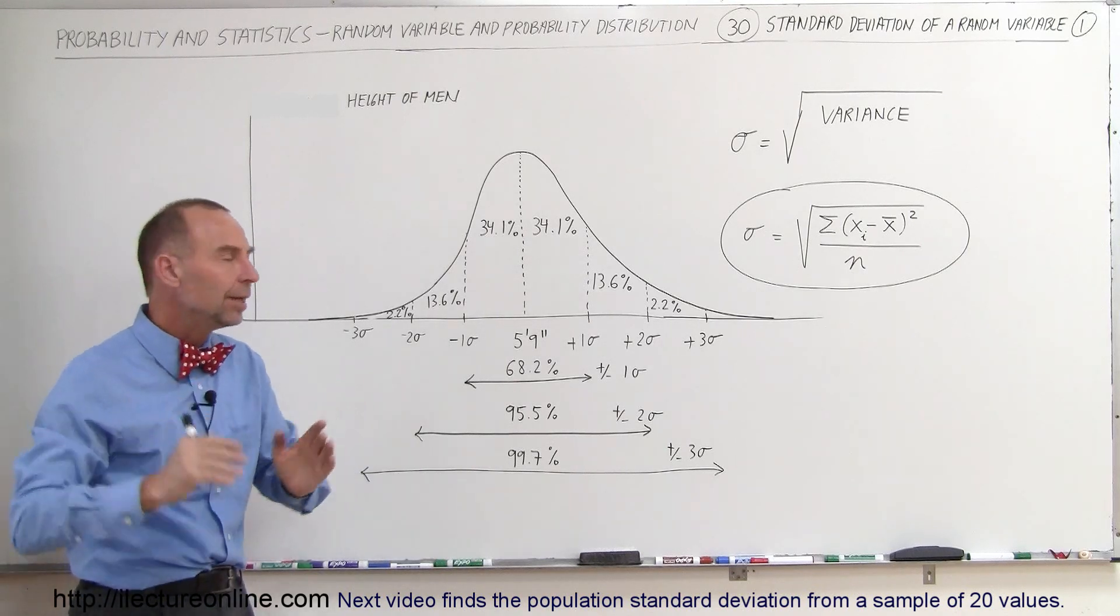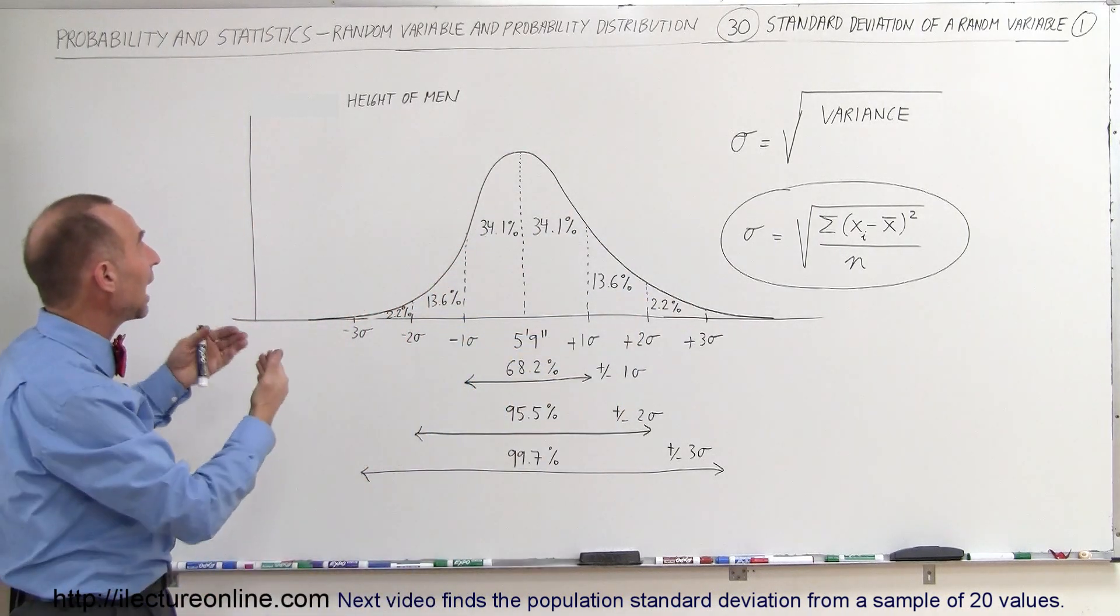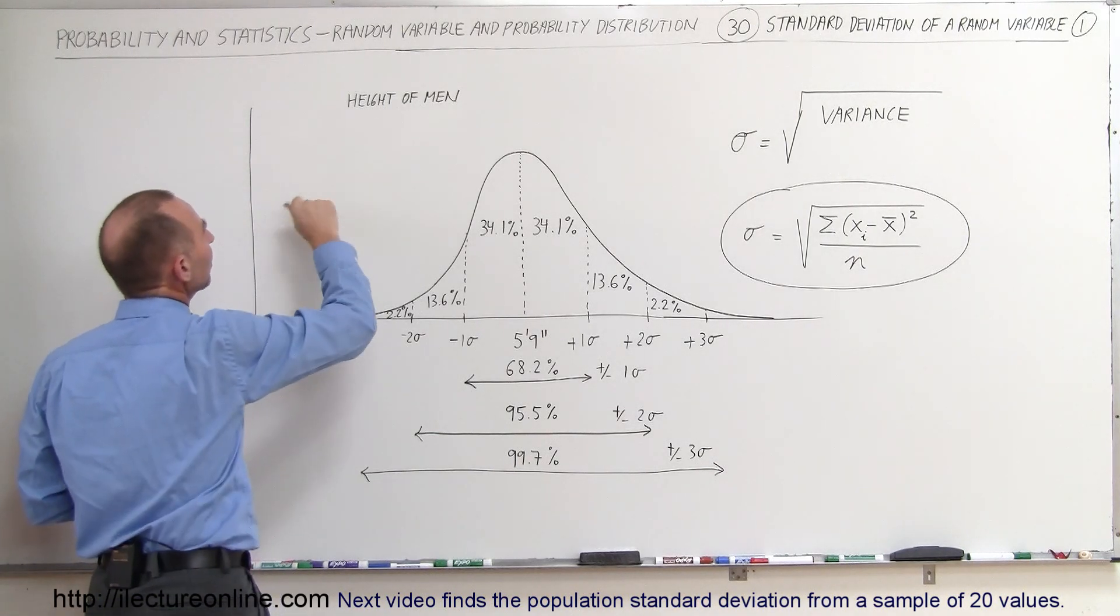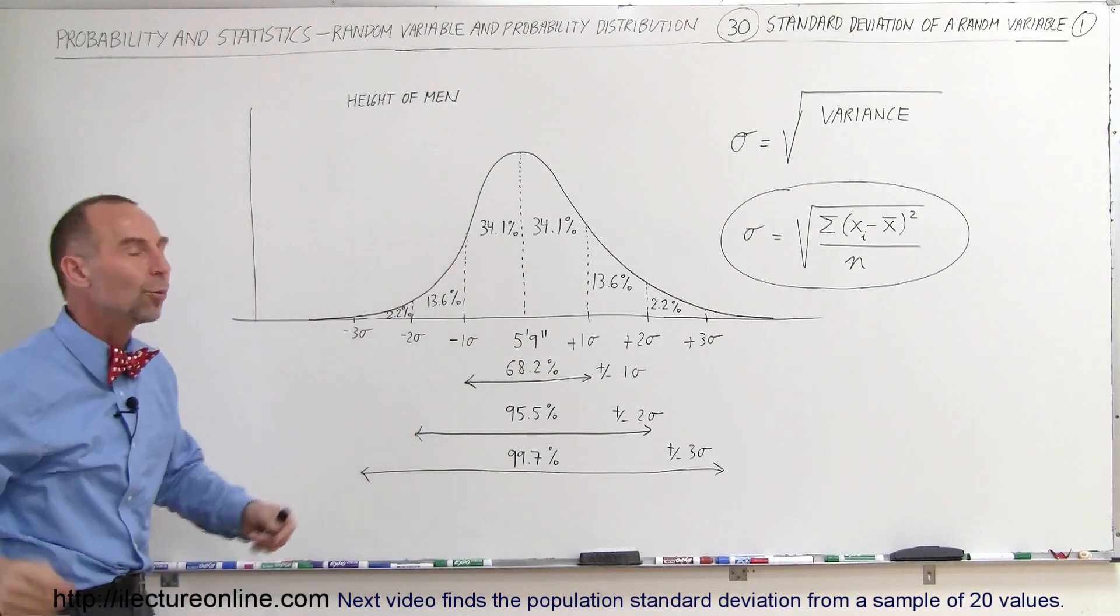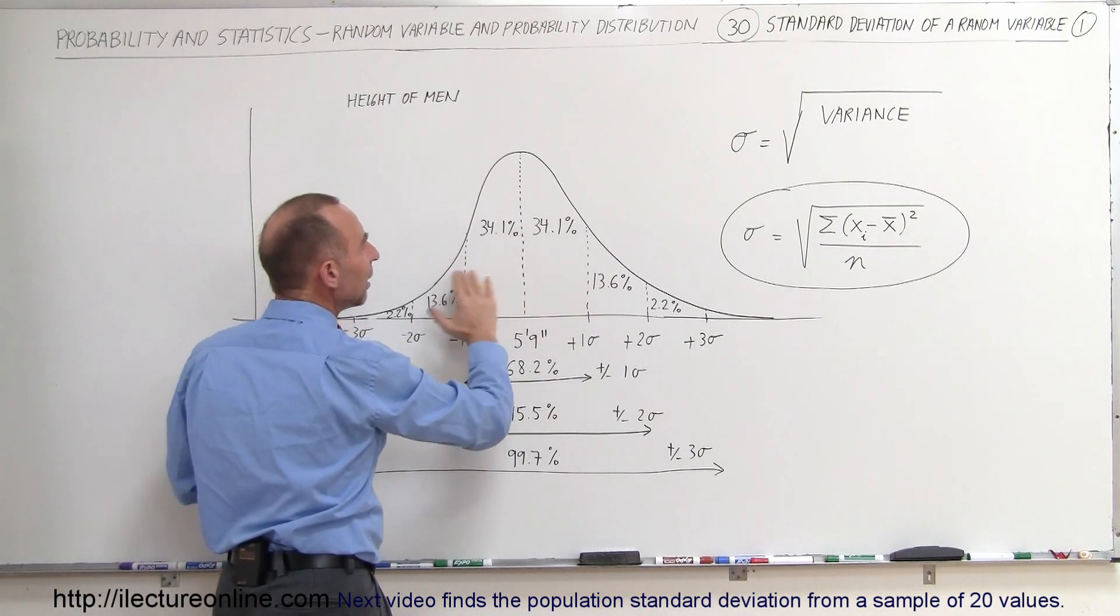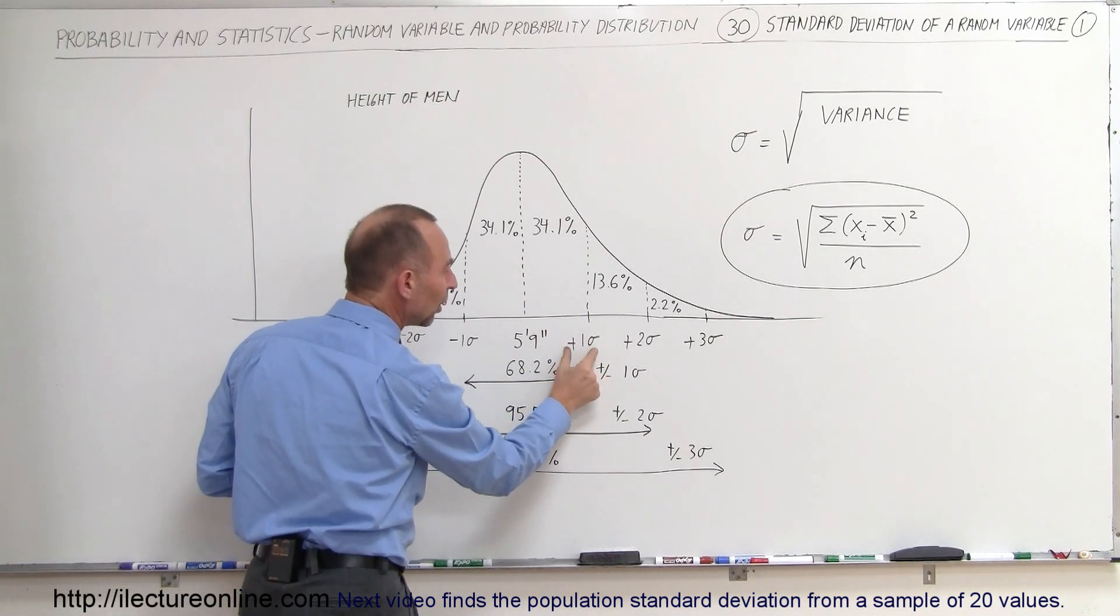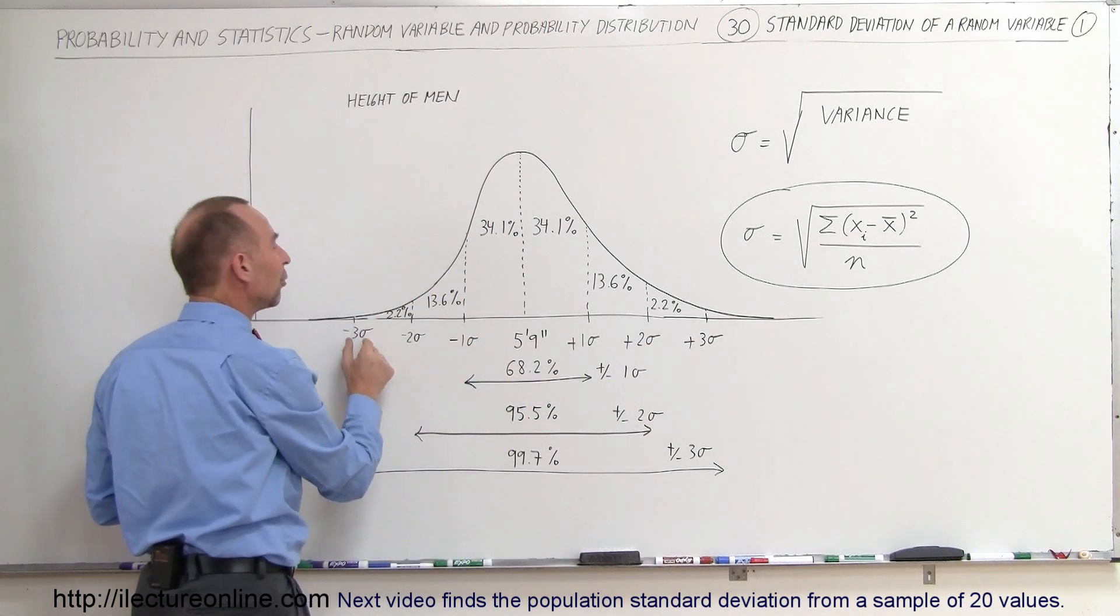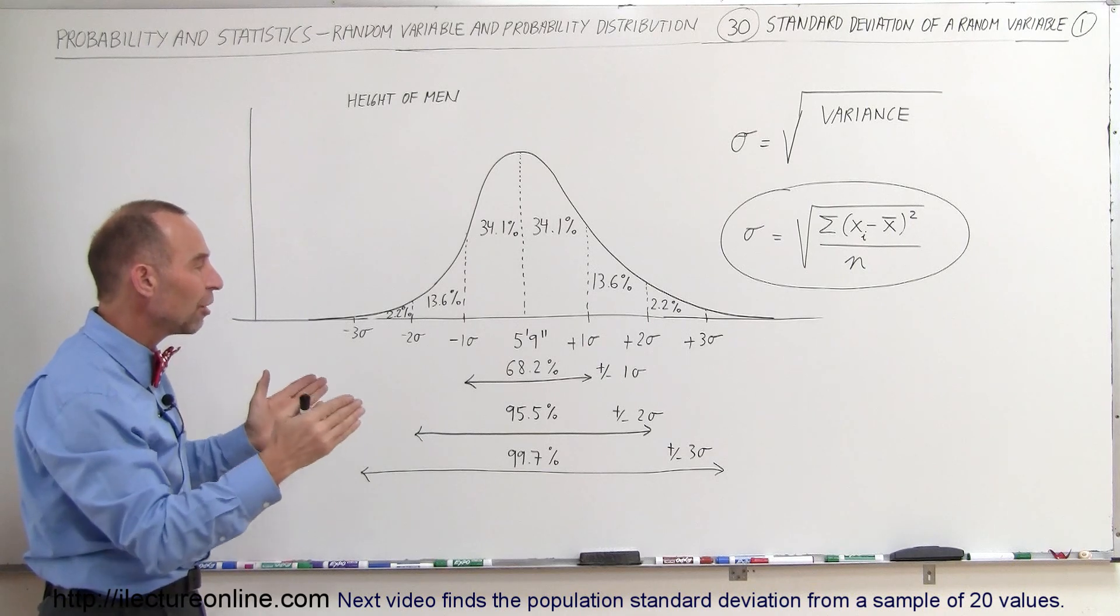So, again, in summary, the standard deviation from a normal distribution of values, in this case, as an example, the height of men is distributed. The average height would be, of course, here, but the height of men would be distributed over some range, and then the distribution can then tell you how many of a sample will fall within certain categories, and those categories are defined by taking the average value and adding 1 sigma, 2 sigma, or 3 sigma to it or subtracting 1 sigma, 2 sigma, 3 sigma from it and then based upon this normal distribution, we can figure out how many of the sample would fall within those ranges.